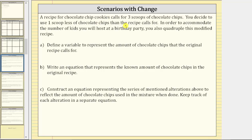A recipe for chocolate chip cookies calls for three scoops of chocolate chips. You decide to use one scoop less of chocolate chips than the recipe calls for. In order to accommodate the number of kids you will host at a birthday party, you also quadruple this modified recipe. Define a variable to represent the amount of chocolate chips that the original recipe calls for.